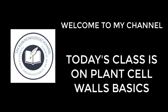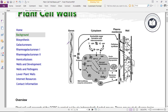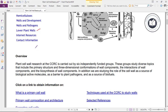Hi friends, welcome back to my channel. Today let's see about the plant cell wall basics. In this plant cell wall structure, we will be seeing about homogalacturonan biosynthesis, galacturonans, rhamnogalacturonans 1, rhamnogalacturonan 2, hemicellulose, walls and development, walls and pathogens, lower plant walls, internal resources, and contact information.